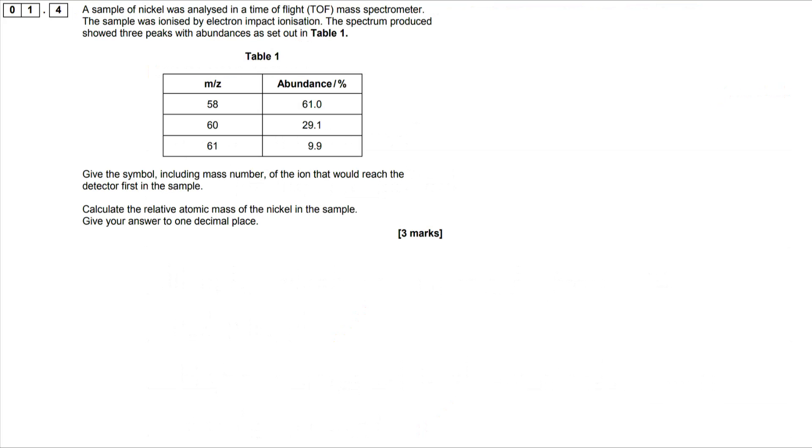Moving on to 1.4, we have some mass spectrometry calculations. First part of this: give the symbol including the mass number of the ion that would reach the detector first in the sample. Well it's not really a surprise that it's going to be nickel. These are all isotopes of nickel. You don't want to forget that this is an ion.